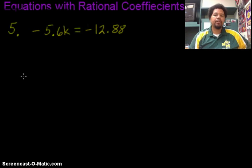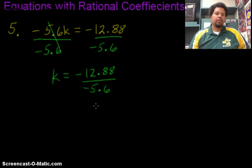Here's another example dealing with decimals. We want to get our k by itself. It's being multiplied by a negative 5.6. So that means I'm going to divide by a negative 5.6 to both sides. So I get negative 12.88 divided by a negative 5.6.